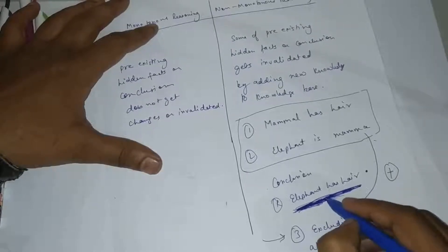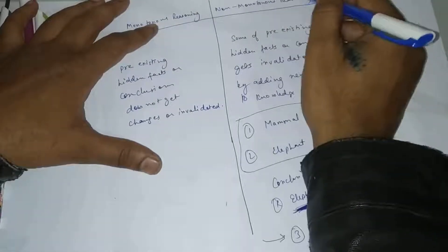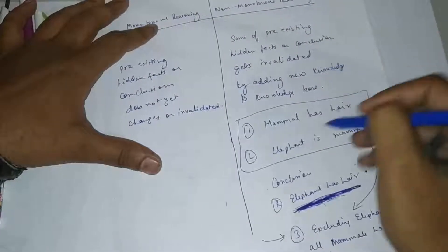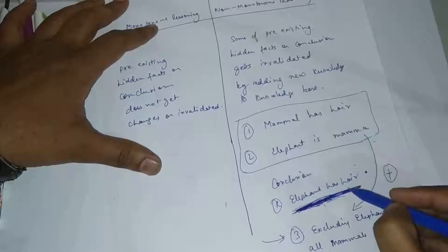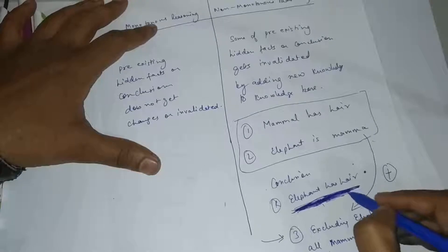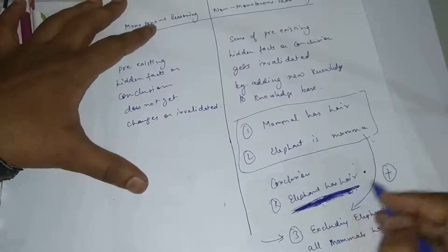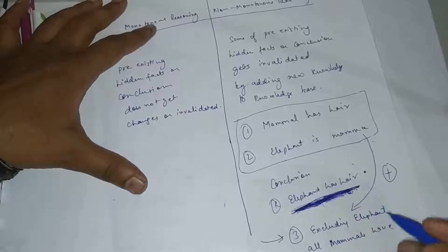So this is non-monotonous reasoning. When there is a new fact added and the pre-existing facts or conclusions are invalidated, then that reasoning is non-monotonous reasoning.